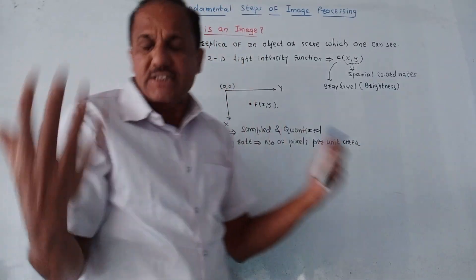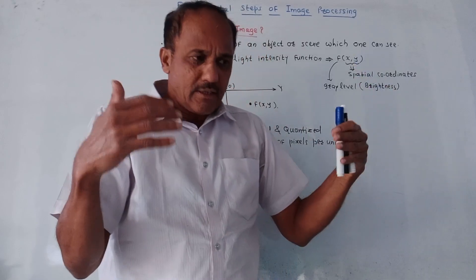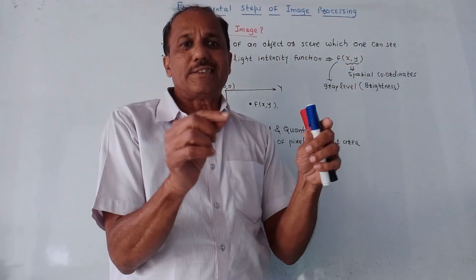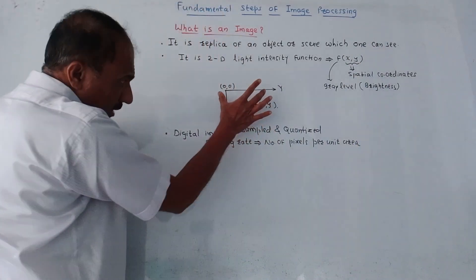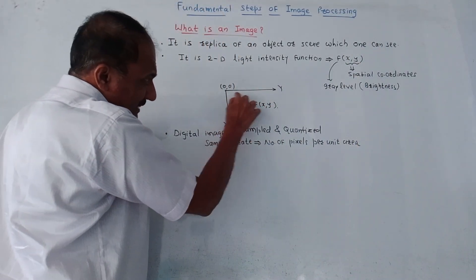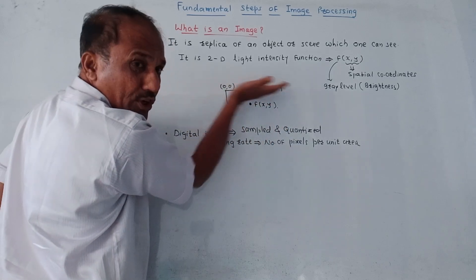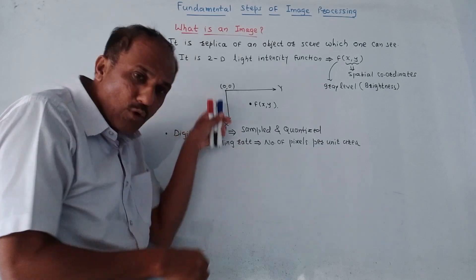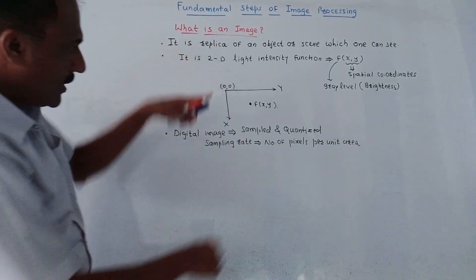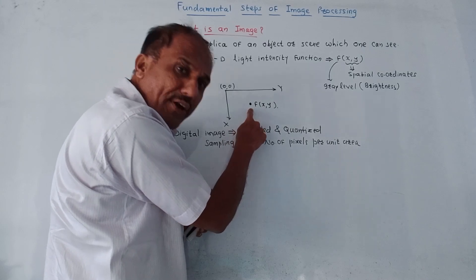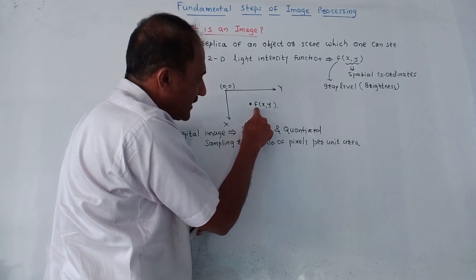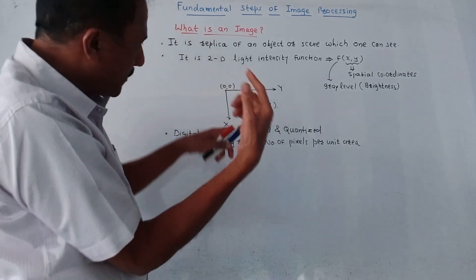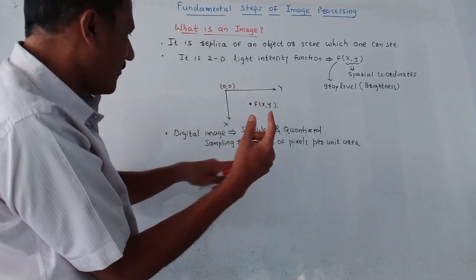What is a pixel? There are many pixels in an image, and by joining all the pixels, the image is created. The graph is basically of x versus y axis, where the y axis is the horizontal axis and the x axis is the vertical axis moving downward. This is the pixel and its position is (x, y).